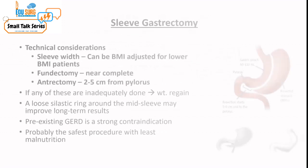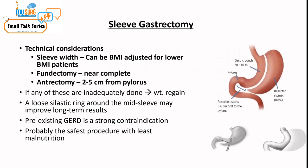For sleeve gastrectomy, the technical considerations include the sleeve width, which can be BMI-adjusted for lower BMI patients and is important especially when doing surgery for purely metabolic reasons like type 2 diabetes. A near-complete fundectomy should be performed so there is no post-op dilatation and the effect of ghrelin removal is as complete as possible. The antrectomy is a point of contention, with resection from 2 to 5 cm from the pylorus — the lesser the distance from the pylorus, the more effective and longer lasting the sleeve gastrectomy. If any of these are inadequately done, it will lead to weight regain.